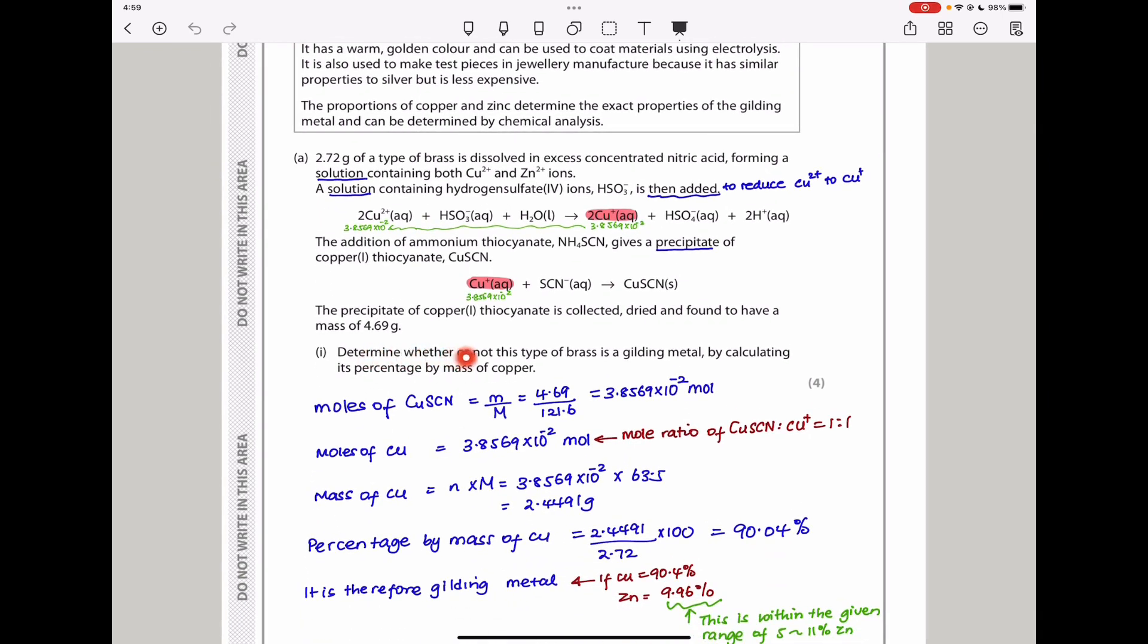They want to determine whether or not this type of brass is a gilding metal by calculating the percentage by mass of copper. To calculate the percentage by mass of copper, I found the number of moles of copper(I) thiocyanate, which is mass over molar mass. The mass was 4.69 grams. When we divide by the molar mass, I get 3.8569 times 10^-2 moles.